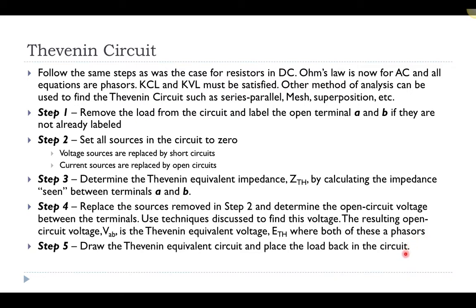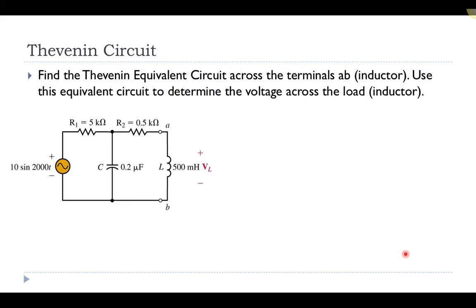We can then draw the Thévenin equivalent circuit and place the load back. Looking at the example, we're going to find the Thévenin equivalent circuit across terminals A and B — here's A and here's B — which corresponds to the inductor. We're going to remove this inductor from the circuit and replace everything else across those terminals with one voltage supply and one total equivalent impedance.